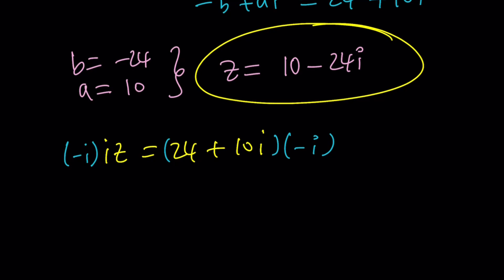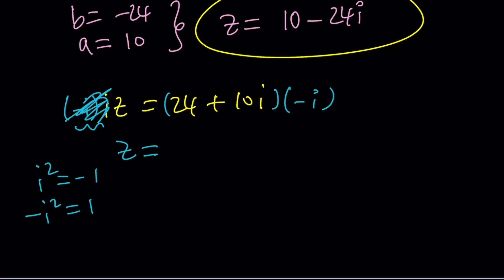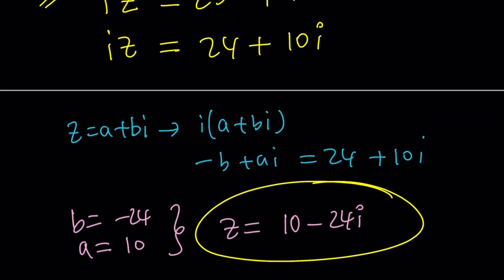Because negative i times i is negative i squared, and we just talked about this in another video on my main channel. And that was negative i squared is negative 1, which is positive 1. So i squared is negative 1, negative i squared is positive 1. Make sense? So this is just going to cancel out, leaving us with z. Let's simplify it by distributing. Negative 24i plus 10i squared. That's going to be a positive 10 minus 24i. One more time, we got the same answer. Awesome. So that's the value of z using the first method.